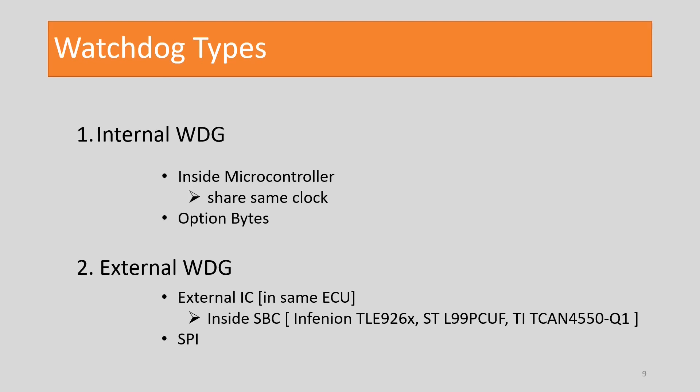The second one is the external watchdog. It is part of an external IC, usually a system basis chip in the automotive domain along with CAN and LIN transceiver. Examples are Infineon TLE9062, TLE9259, and from Texas Instruments we have TCAN4550. The microcontroller may use SPI communication for triggering the watchdog by transmitting a specific value to the control register. The watchdog reset control pin will be connected to the reset pin of the microcontroller for generating the reset in fault conditions.